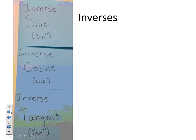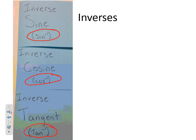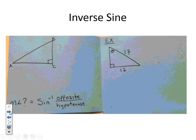This should be the foldable that you have. We're going to be talking about inverse sine, inverse cosine, and inverse tangent. We'll use shorthand notation so we don't have to write the full names each time. Let's get started.